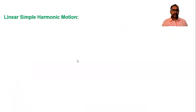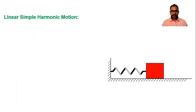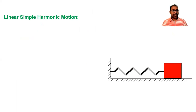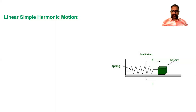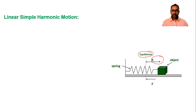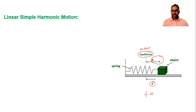Linear simple harmonic motion — first let's look at an example. A block is oscillating on a spring, which is an example of linear SHM. In this example, the block is displaced by a displacement x toward the right side from the equilibrium position. A restoring force develops in the spring directed toward the mean position. This restoring force depends on the displacement of the block, so they are proportional.